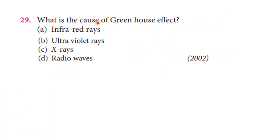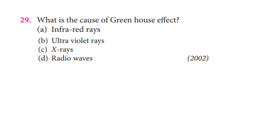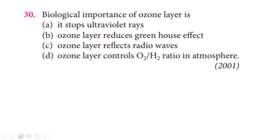The cause of the greenhouse effect: the greenhouse effect is related to heat and is caused by infrared rays. Infrared rays trap heat within the atmosphere, leading to the greenhouse effect. So infrared rays is the correct answer. Regarding the biological importance of the ozone layer, it stops ultraviolet rays from reaching the Earth's surface.